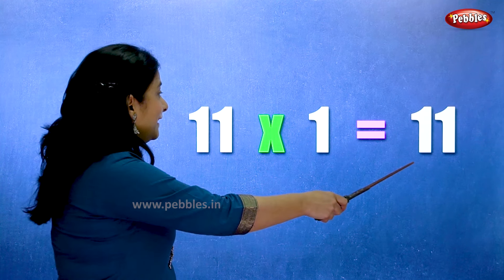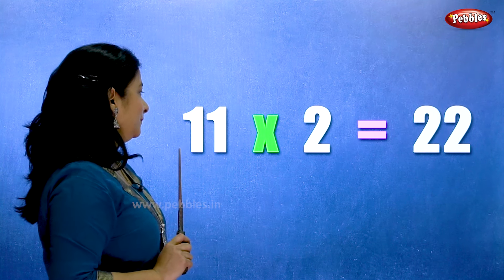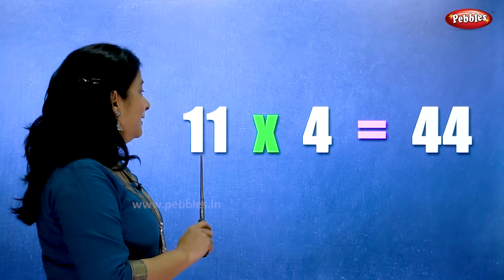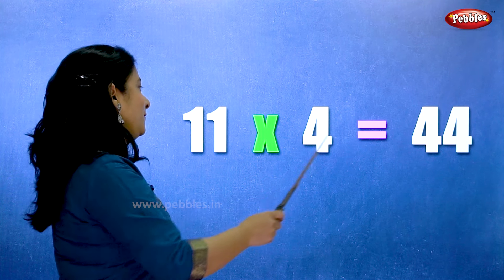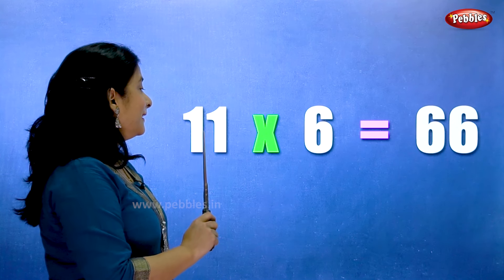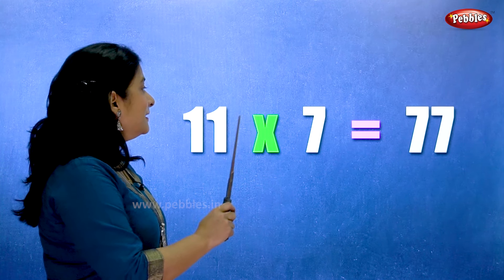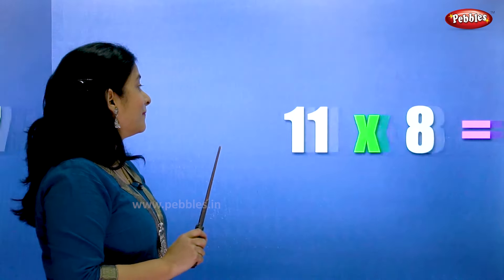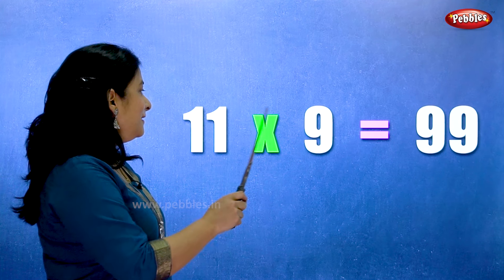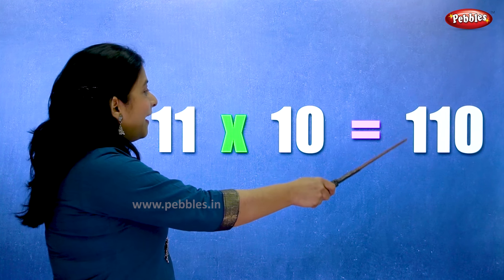Eleven ones are eleven. Eleven twos are twenty-two. Eleven threes are thirty-three. Eleven fours are forty-four. Eleven fives are fifty-five. Eleven sixes are sixty-six. Eleven sevens are seventy-seven. Eleven eights are eighty-eight. Eleven nines are ninety-nine. Eleven tens are hundred and ten.